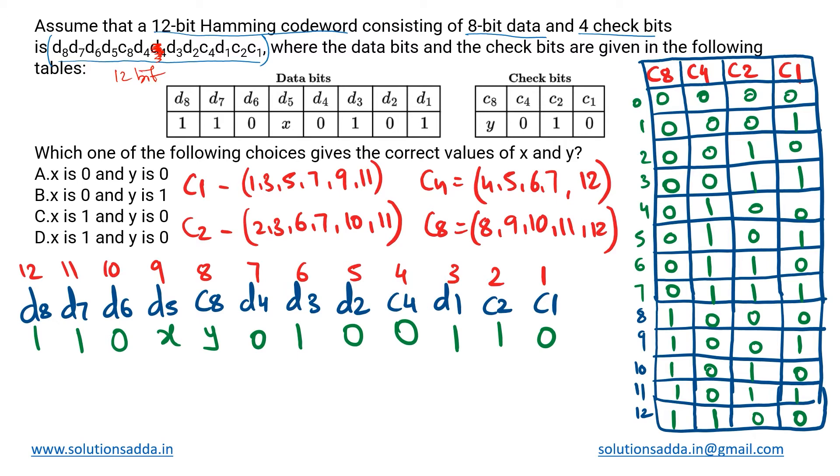Now the corresponding data bits and check bits have been given to us in these tables and we need to determine the values of these unknown bits x and y. X corresponds to data bit d5 and y corresponds to the check bit c8.